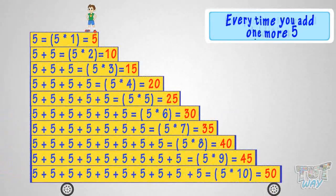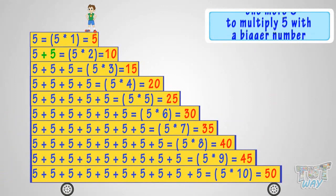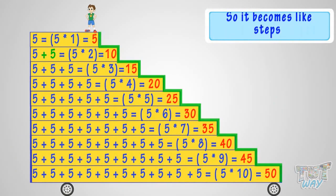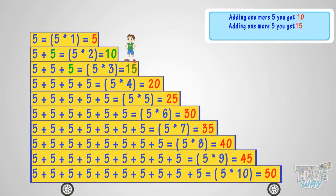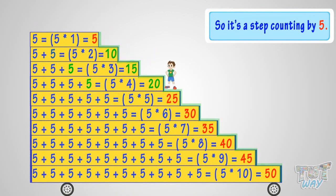Good! We have learned that multiplication is repeated addition. See the figure. Every time you add one more 5 to multiply 5 with a bigger number, it becomes like steps. Adding one more 5, you get 10. Adding one more 5, you get 15. Adding one more 5, you get 20. And so on. So, it's step counting by 5.